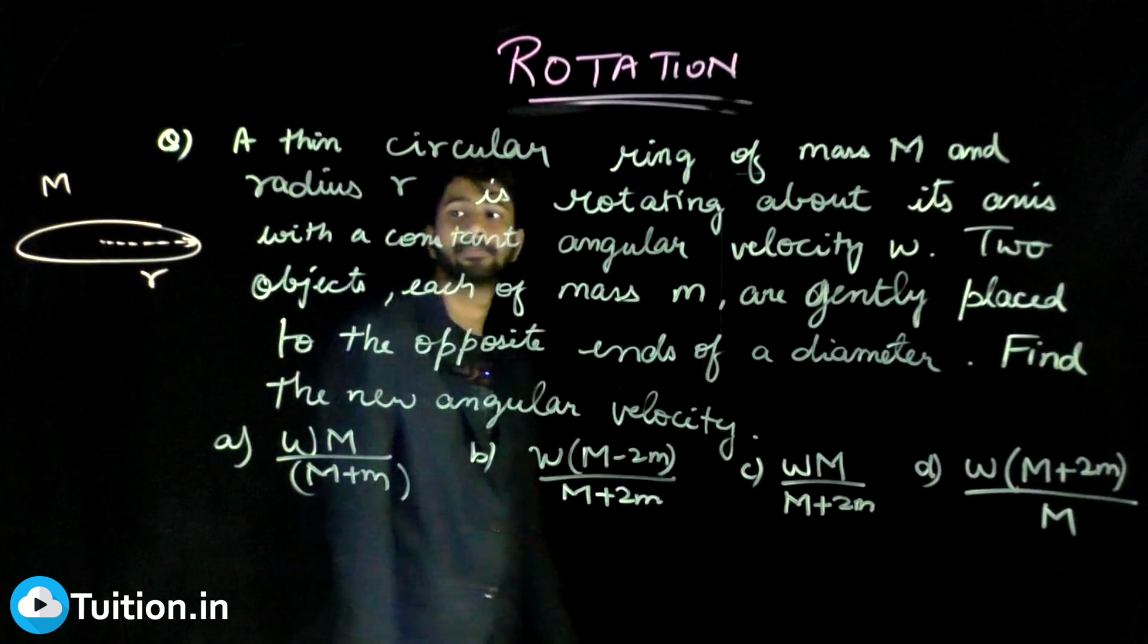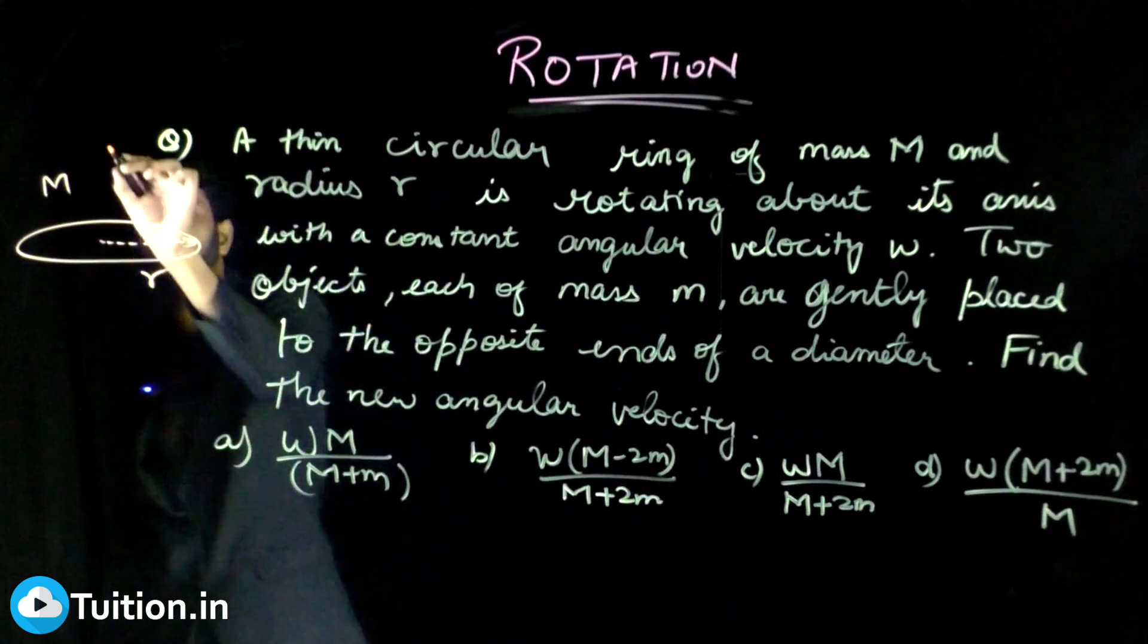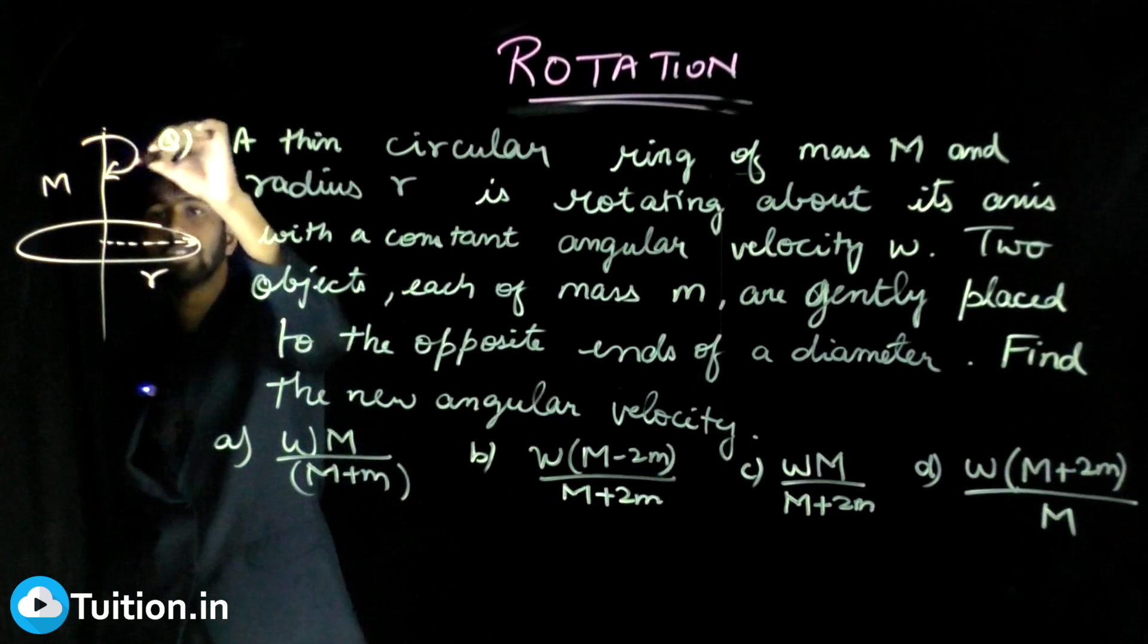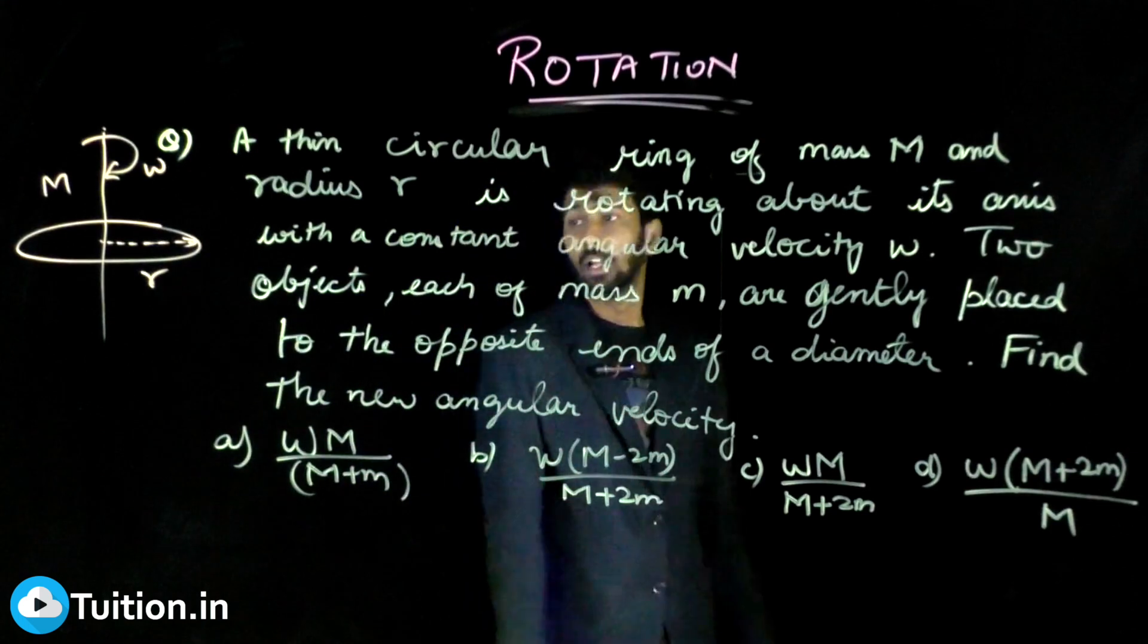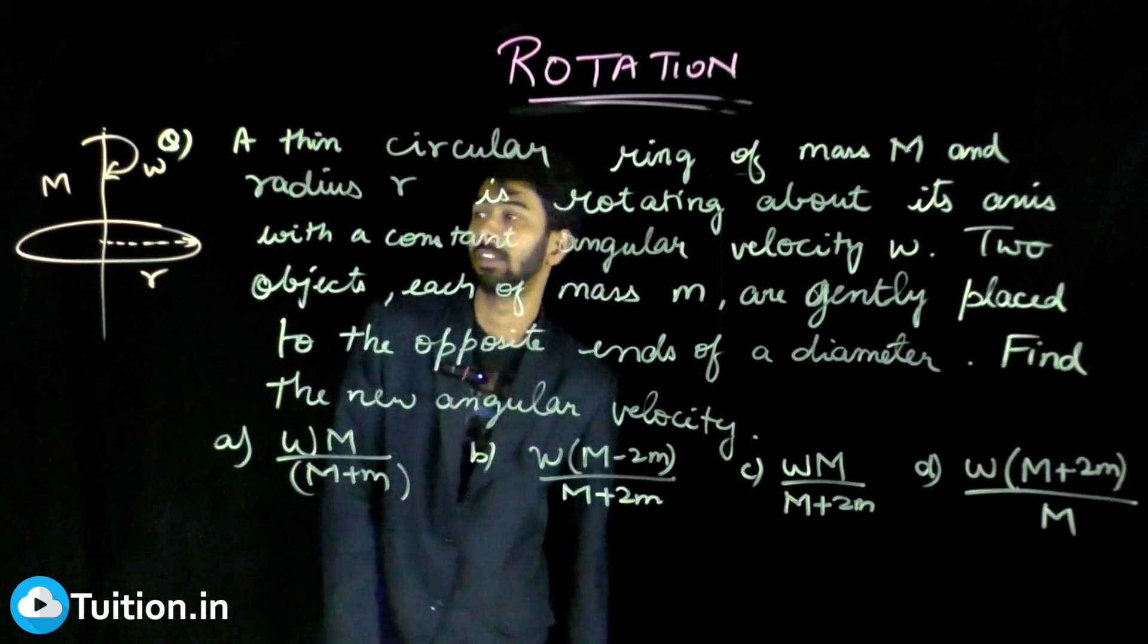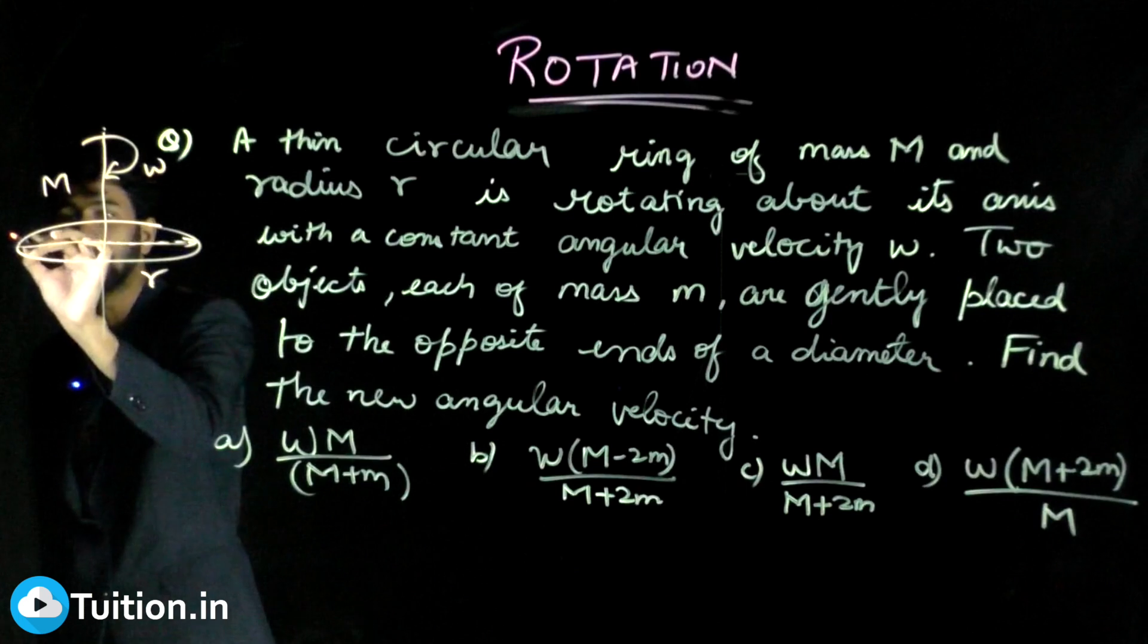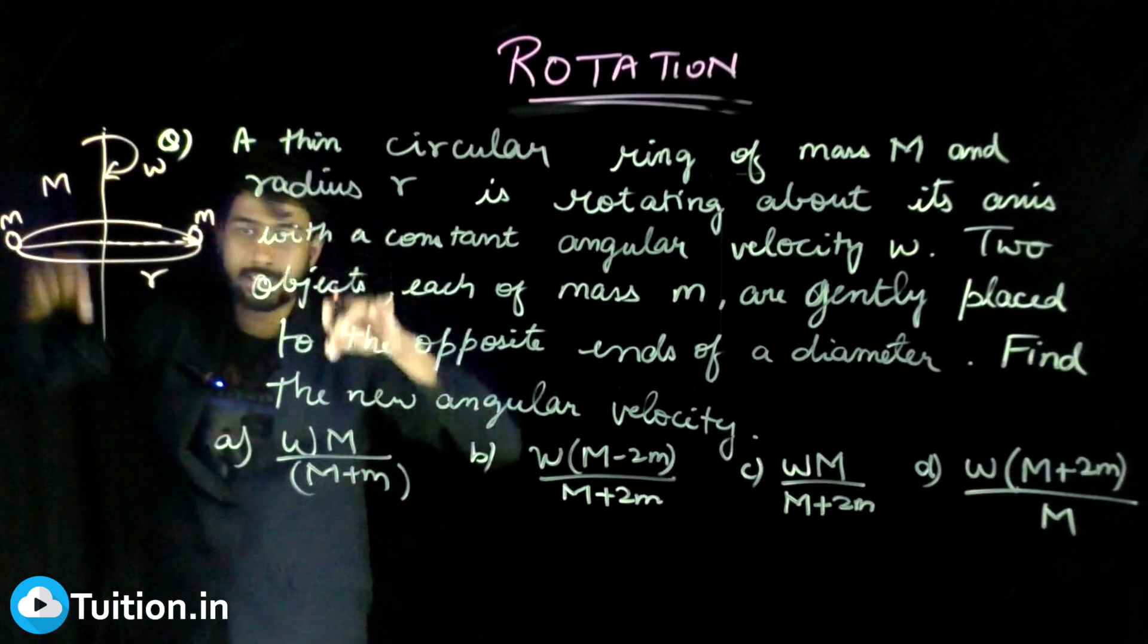This is rotating about its axis with a constant angular velocity of omega. So let this be its axis. It's rotating with angular velocity omega. Two objects each of mass m are gently placed to the opposite ends of a diameter. Now if I take a diameter, there are two objects of mass m which are placed gently on this ring.